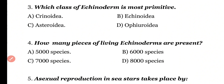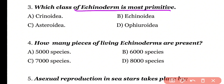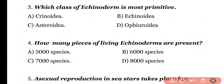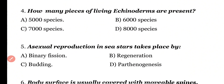Question 3: Which class of Echinoderms is most primitive? Options: Crinoidia, Echinoidia, Asteroidia, Ophiroidia. Correct answer is Option A. Crinoidia is one of the oldest, most primitive classes of Echinoderms.